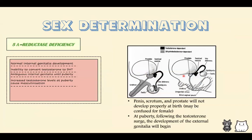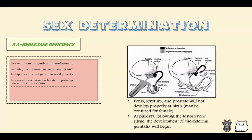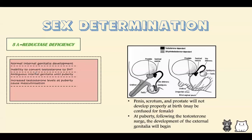The deficiency of 5-alpha reductase is important to remember. Without 5-alpha reductase, you still have normal internal genitalia development, because internal genitalia development is dependent on testosterone, not dihydrotestosterone. But since you cannot convert testosterone to dihydrotestosterone, you will have ambiguous external genitalia — not internal genitalia as was incorrectly stated on the slide.